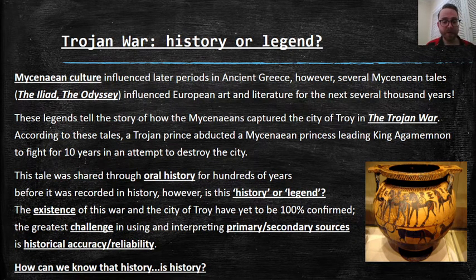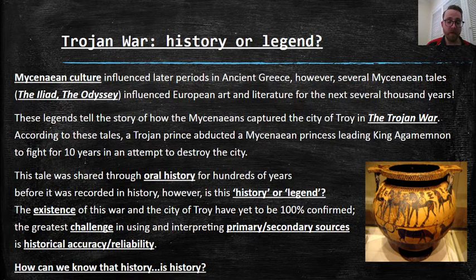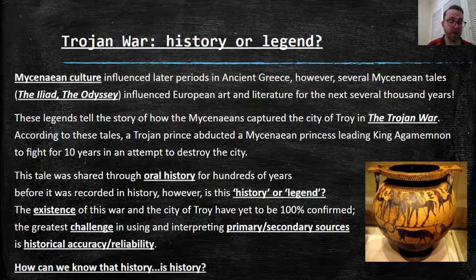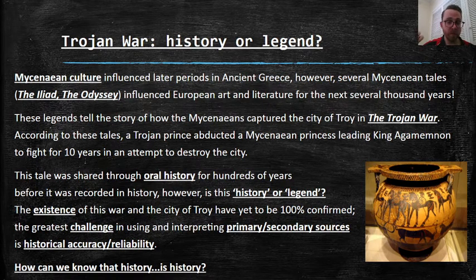This raises the question: the greatest challenge in using and interpreting primary and secondary sources is historical accuracy and reliability. These things are coming from hundreds, sometimes thousands of years ago. How can we be sure? How can we know that history is actually history — that this is really what something used to be, or what it was for, or who owned it?